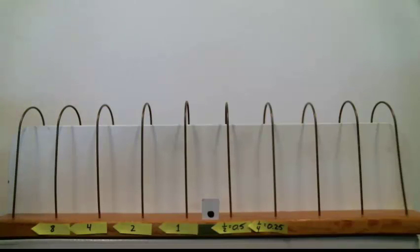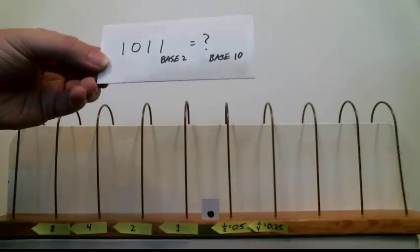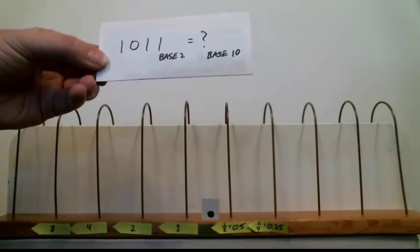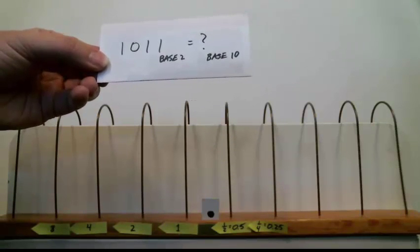Using the base 2 or binary vertical abacus now, let's do a conversion from base 2 into base 10. Now, realize that every wire only has one bead on it now. It either has a bead or it does not. So, here's the problem I want to convert. 1, 0, 1, 1, base 2. So, I get to put that number of beads on every wire. And what is that in base 10?